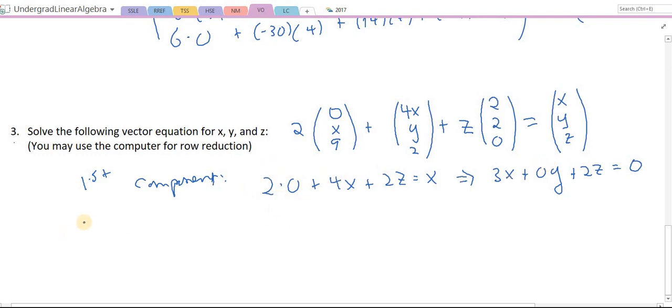Next is the second component. Here we have 2x plus y plus 2z equals y. So let's rearrange. Here we've got 2x. And here we have a y and another y which cancels out, so I still have plus 0y. And then here I've got 2z, and that's equal to 0.